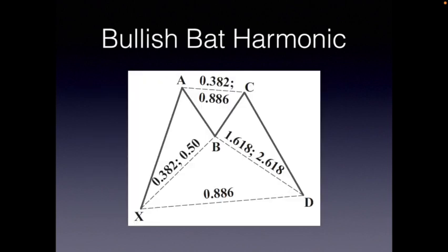This is what a bullish bat harmonic looks like, and this is the way all harmonics are illustrated. It looks a little confusing but it's actually quite simple. The solid lines represent the price action — you can see it's essentially an M-type pattern. The broken lines represent the Fibonacci levels we're looking for between these points. The broken line between X and B is a 0.382 to 0.5 Fibonacci retracement from the X-to-A leg. So the B point is a retracement of X to A, and we're looking for 0.382 to 0.5.